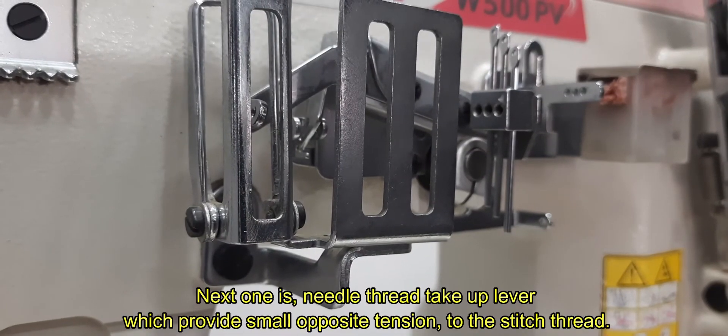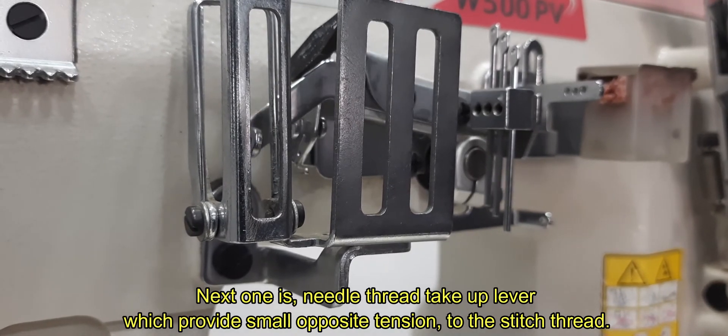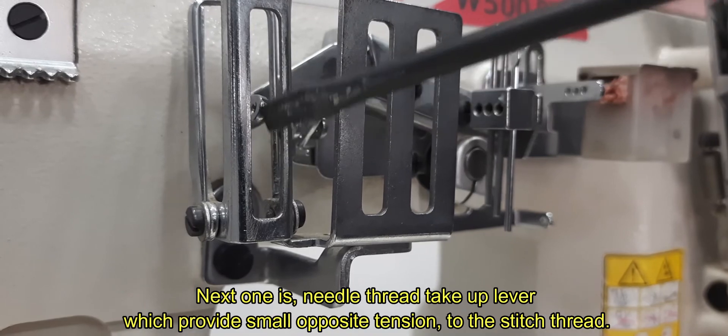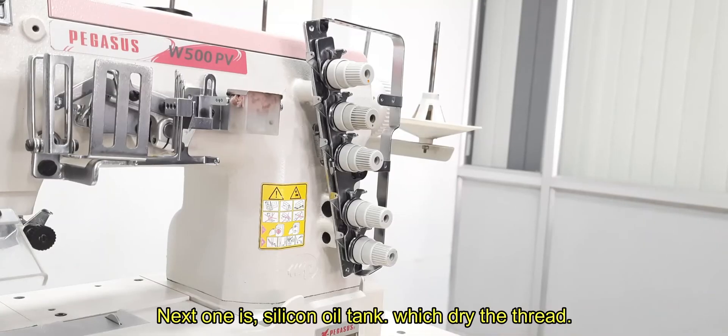Next one is needle thread take up lever, which provides small opposite tension to the stitch thread. Next one is silicon oil tank, which dries the thread.